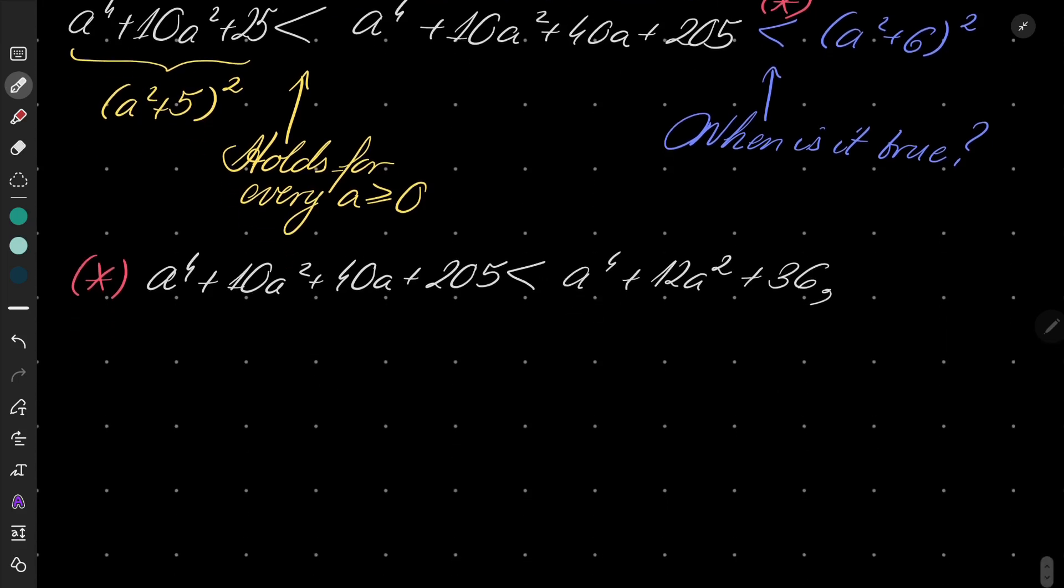Very well. And now, after some simplification, this is equivalent to saying that 2a squared is greater than 40a plus 169.